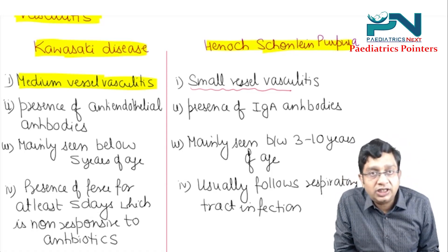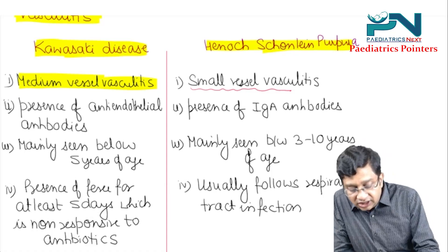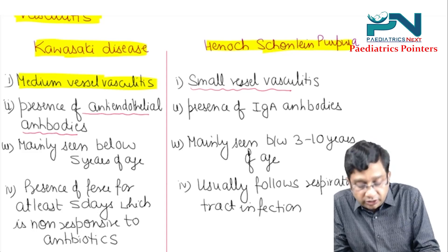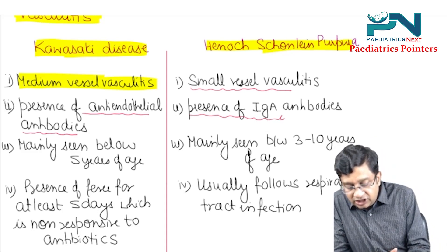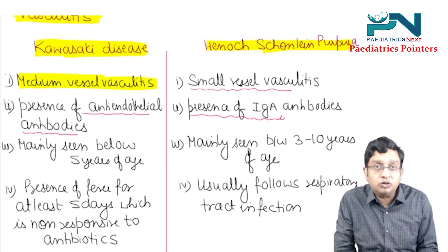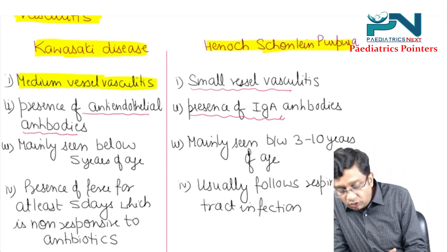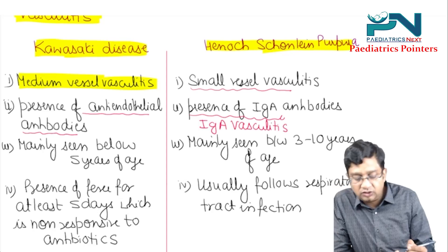In Kawasaki disease, there is presence of anti-endothelial antibodies. But in HSP, there is presence of IgA antibodies — immunoglobulin A antibodies. That's why HSP is also called IgA vasculitis.